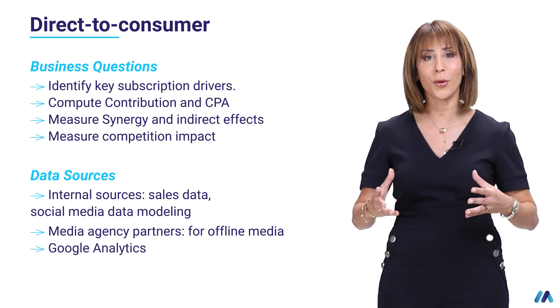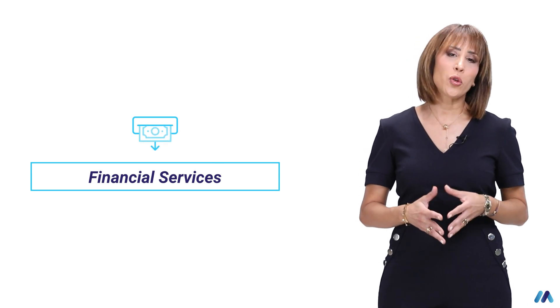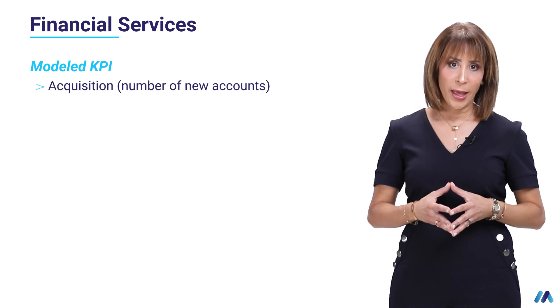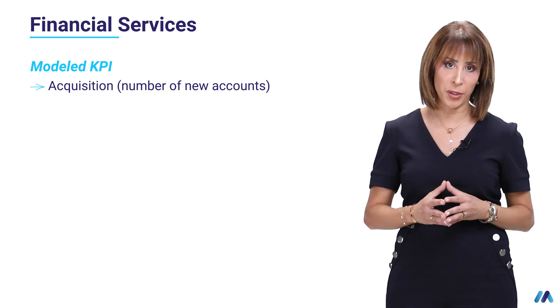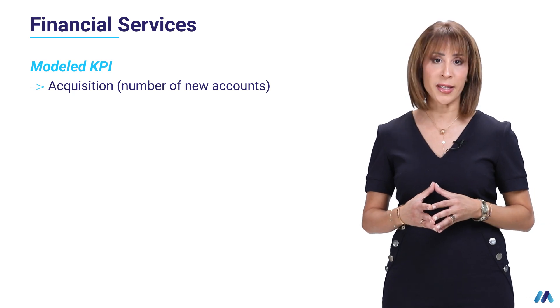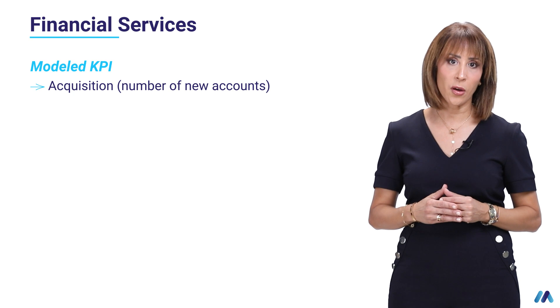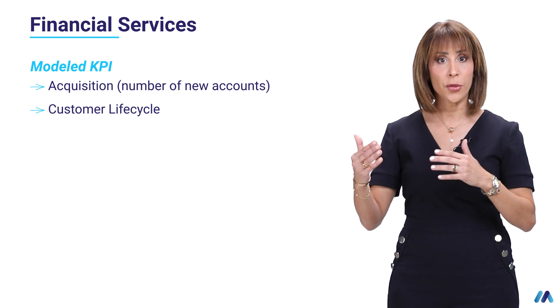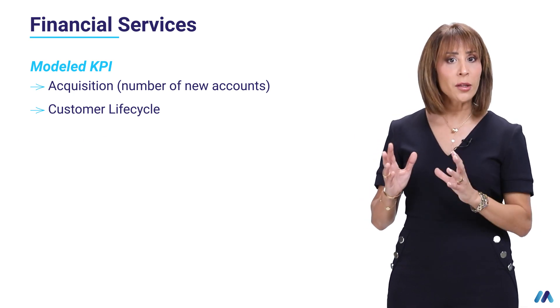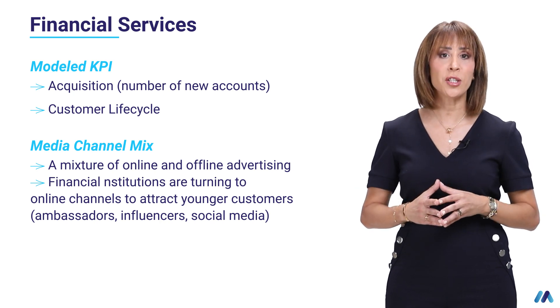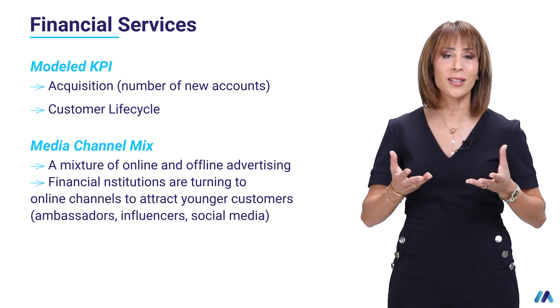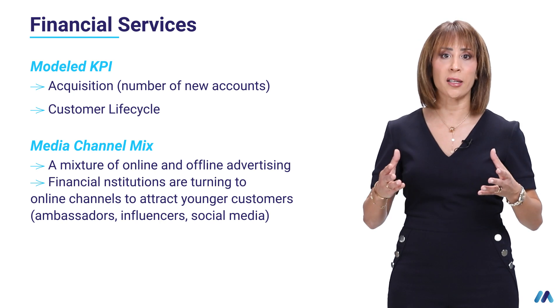In financial services — things like banks and insurance — the KPI we generally model for a bank is the number of new account openings. A bank sells different products, so it's important to understand how media and marketing activity impacts each product. An additional granularity is the customer segment — for example, young customers versus mature customers — because the drivers differ by segment. The media mix is a combination of offline and online, with more budget shifting to digital channels to attract younger segments, including ambassadors and influencers.